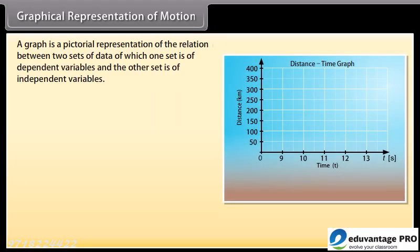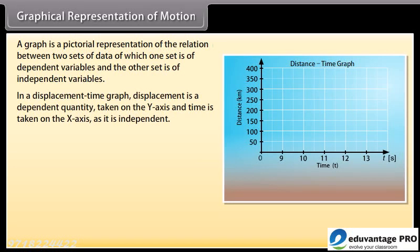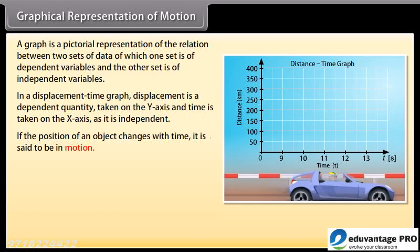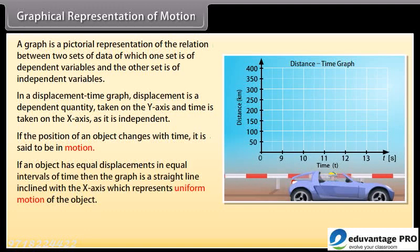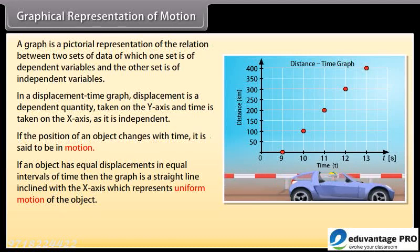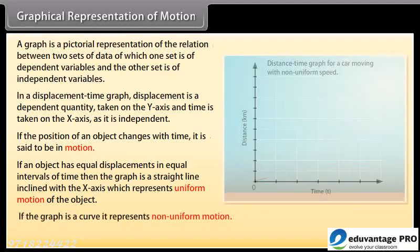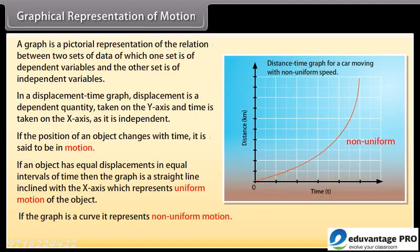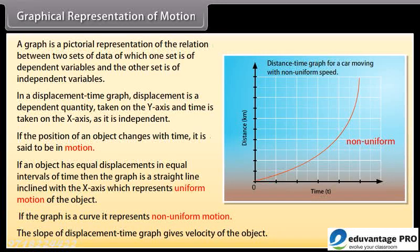Graphical representation of motion. A graph is a pictorial representation of the relation between two sets of data — dependent and independent variables. In a displacement-time graph, displacement is on the y-axis and time is on the x-axis. If an object has equal displacements in equal intervals of time, the graph is a straight line inclined with the x-axis, representing uniform motion. If the graph is a curve, it represents non-uniform motion. The slope of the displacement-time graph gives the velocity of the object.